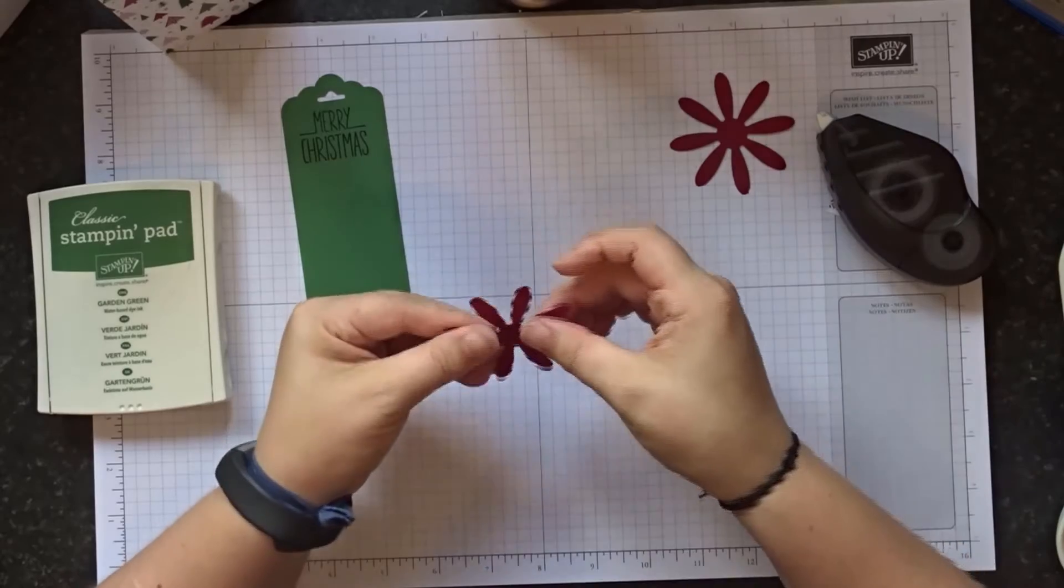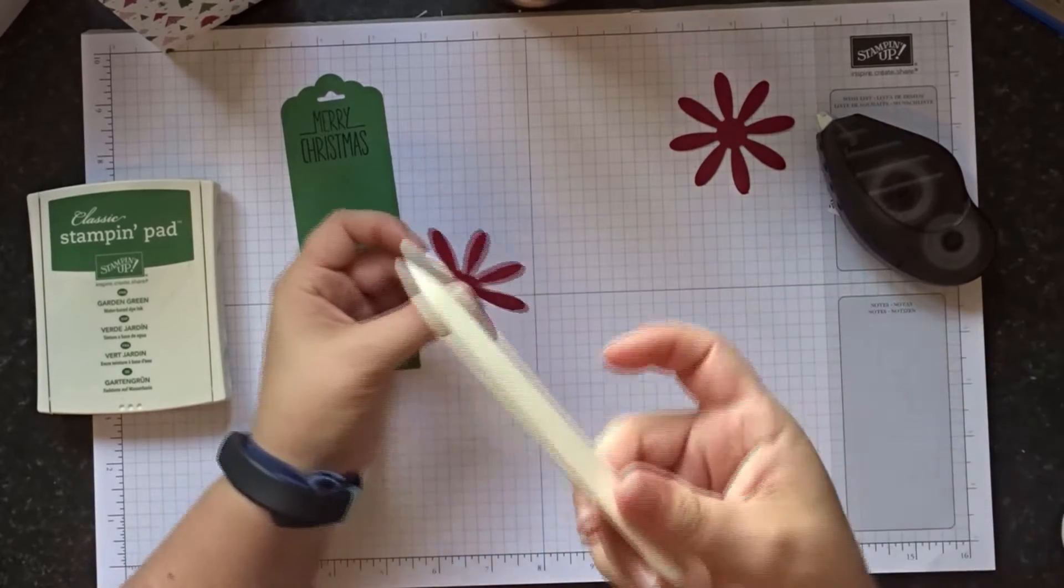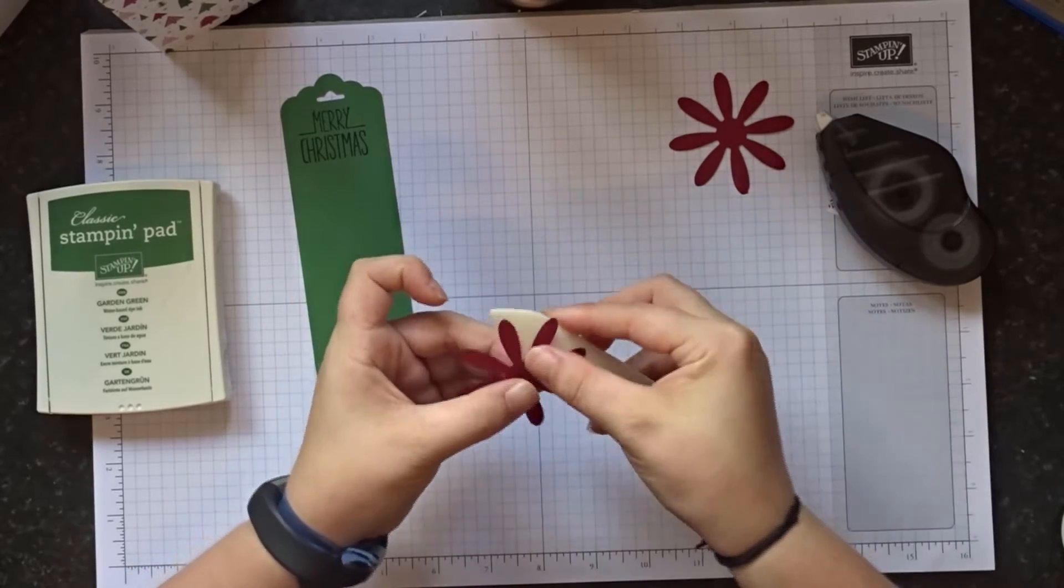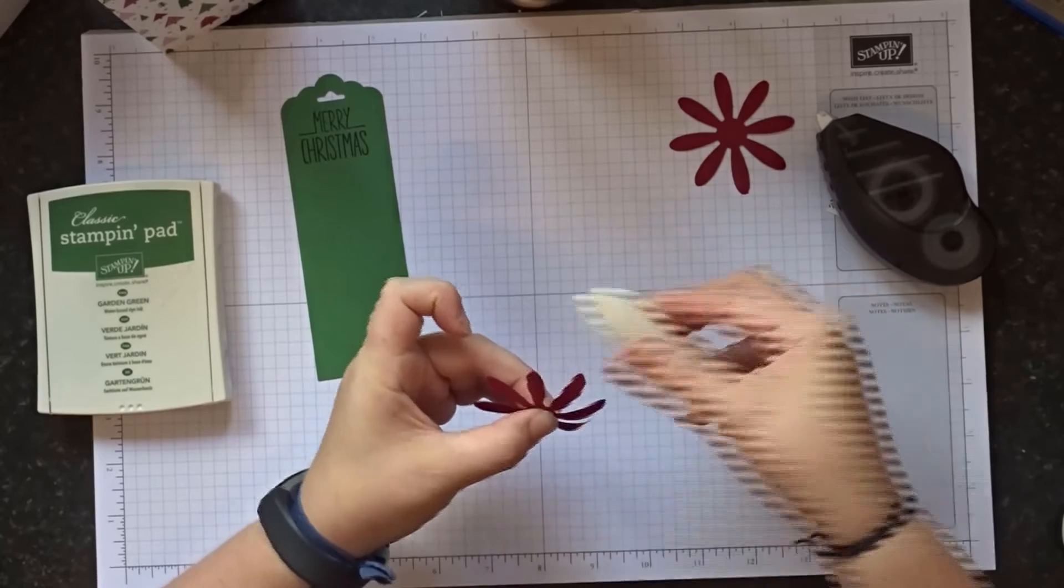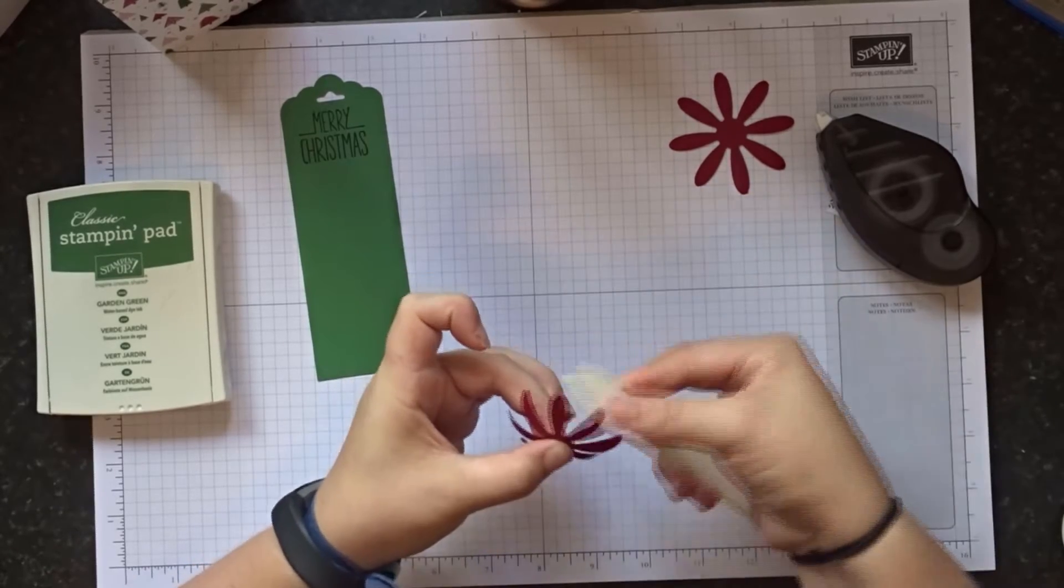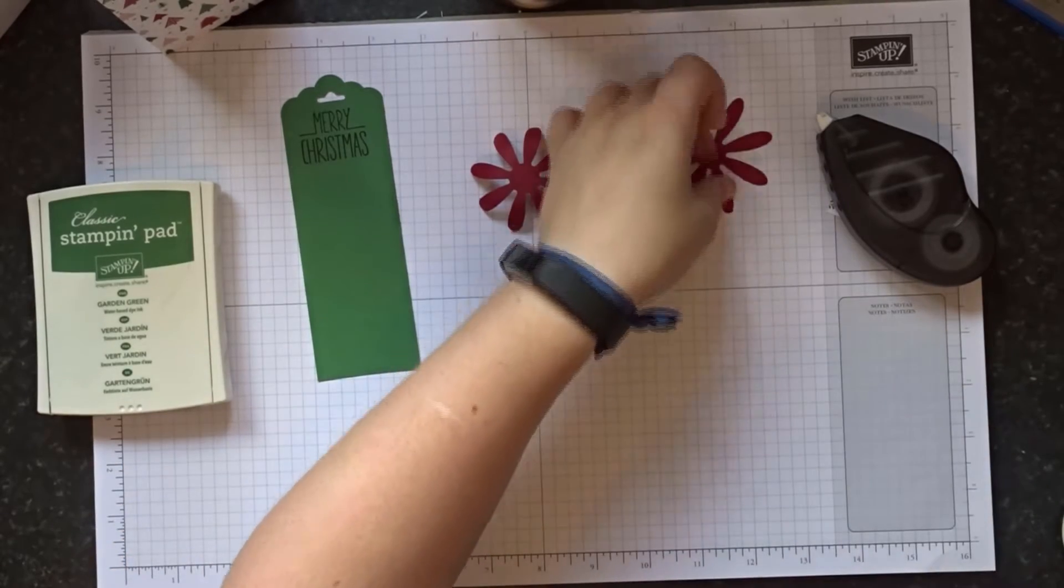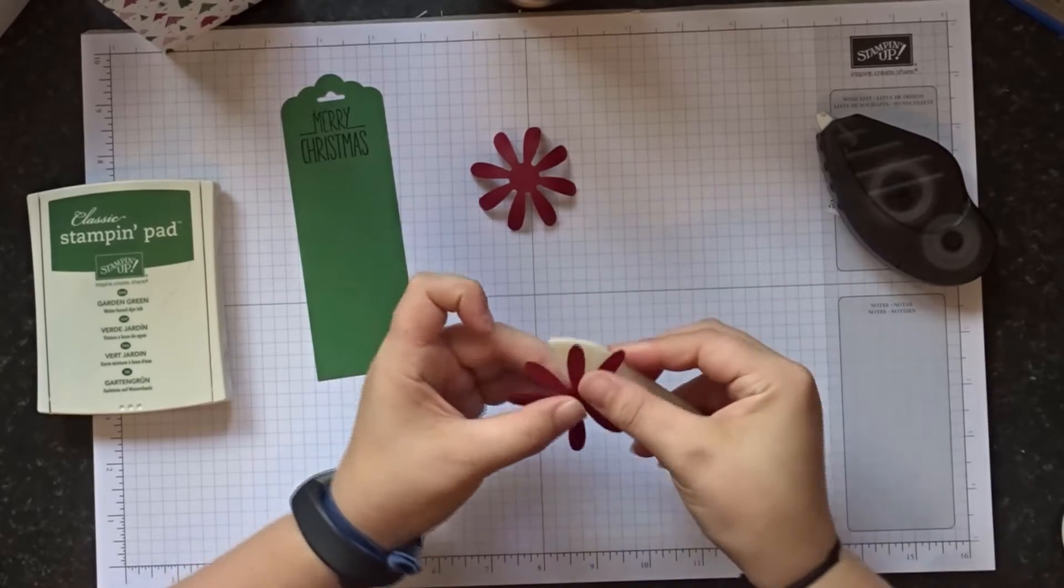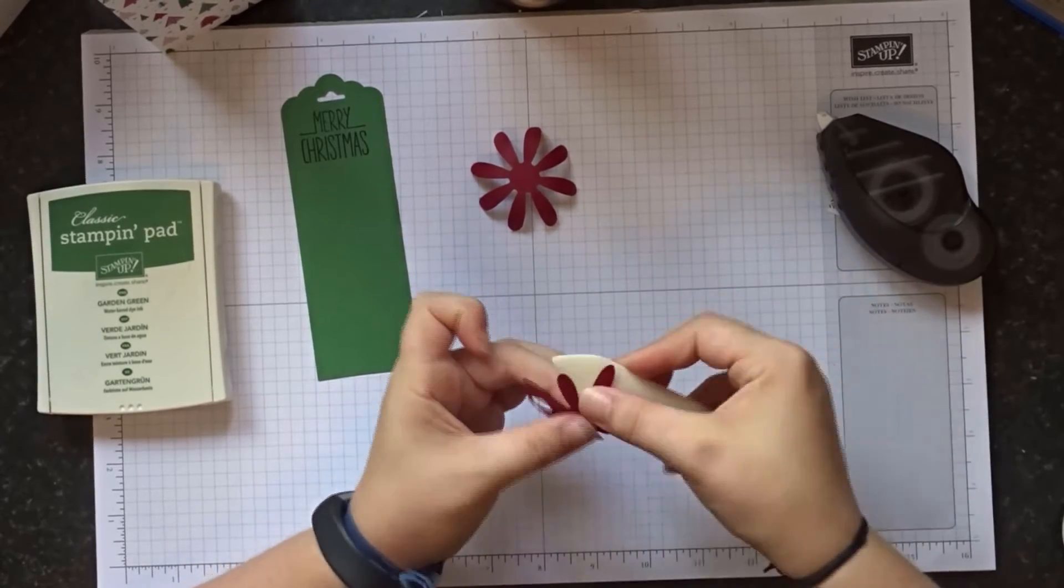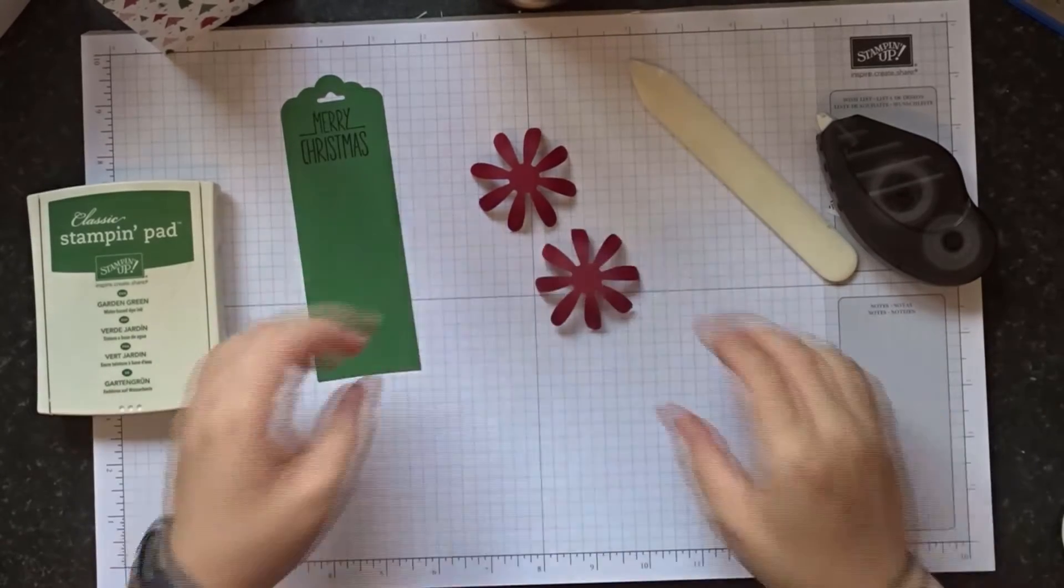We will first do a bit of rounding. So grab your bone folder and your punched flowers and just curl them gently back on themselves. Just work your way around each one and bend them back on themselves. Exactly the same on each of the two punched flowers.